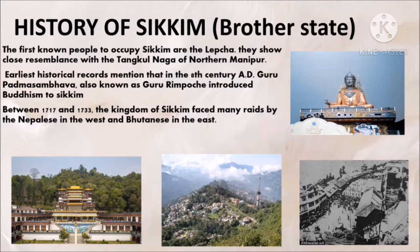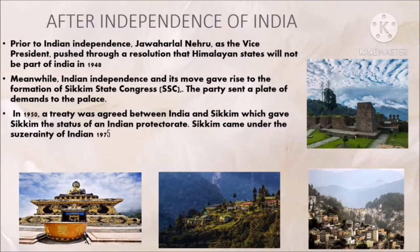History of Sikkim: The first known people to occupy Sikkim were the Lepchas, whose cultural traits were similar to those of Meghalaya. Earlier historical records mention the passage of Buddhist saint Padmasambhava through Sikkim in the 8th century AD. Guru Padmasambhava, also known as Guru Rinpoche, introduced Buddhism and predicted that a century later the era of monarchy would arrive. Between 1717 and 1733, the kingdom of Sikkim faced many raids by the Nepalese in the west and Bhutanese in the east. To support Sikkim and defend Tibet against the Gorkha kingdom of present-day Nepal, China sent troops. With the subsequent defeat of the Gorkhas, it was the Chinese Qing dynasty that established control over Sikkim. Prior to Indian independence, Jawaharlal Nehru, as Vice President of the Executive Council, pushed through a resolution that Sikkim and Bhutan would not be part of the Indian constituency and were to be negotiated separately.